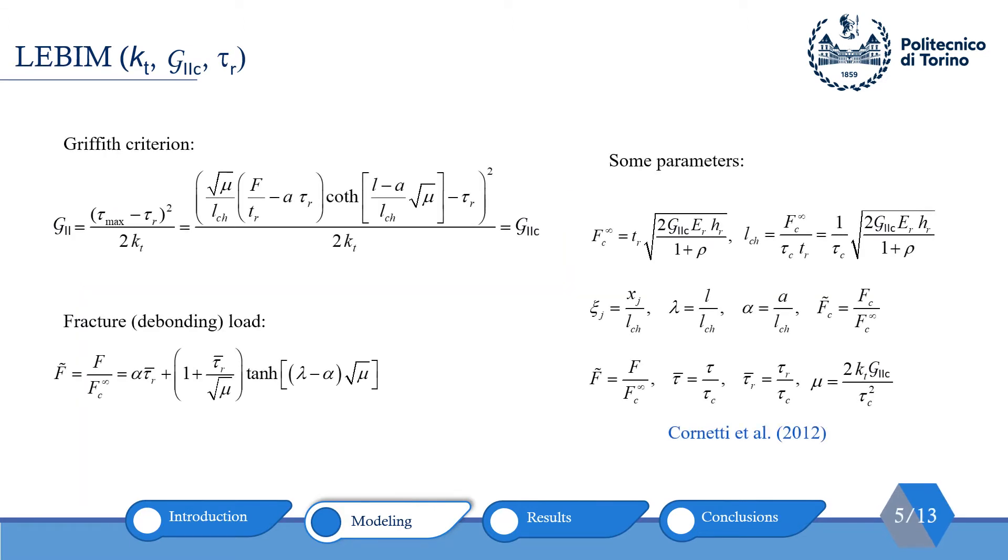After knowing stress distribution along the interface, we can use a fracture criterion to determine fracture load. Here, we used Griffith's criterion to determine the debonding load. As you can see, based on this criterion, fracture or debonding occurs when G reaches its critical value G_2c.